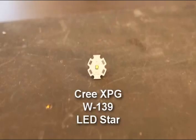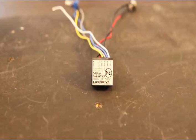Parts in this video include an LED star such as this Cree XPG W139, 18-24 gauge stranded wire (in this case, part of a wired buck puck).